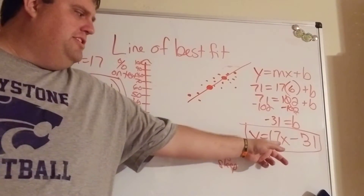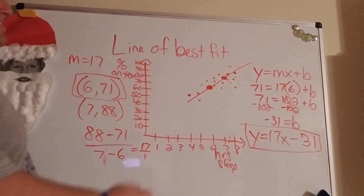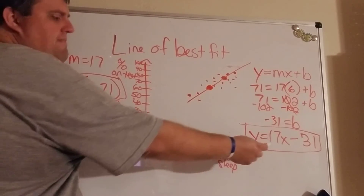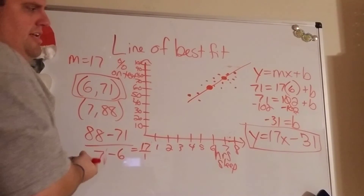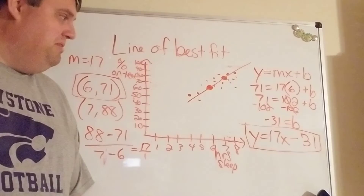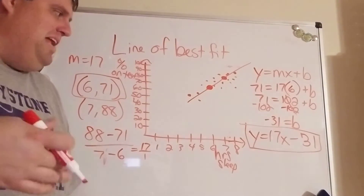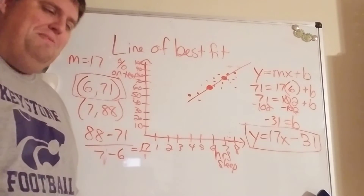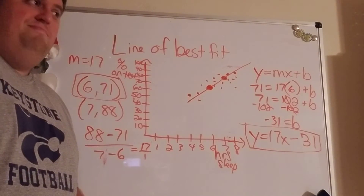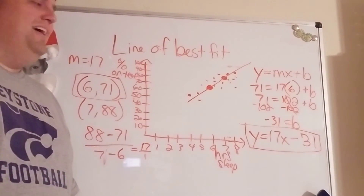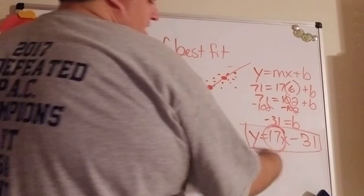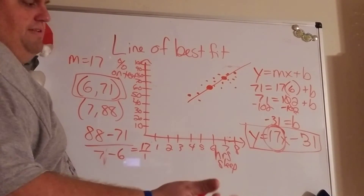You also want to be able to describe what the line is actually telling us. What does my slope mean here? As a person sleeps an hour more, they score 17 points better on their test. Now, I completely made up this data, so don't count on getting one extra hour of sleep and doing 17 points better — it's probably more like five points or so.